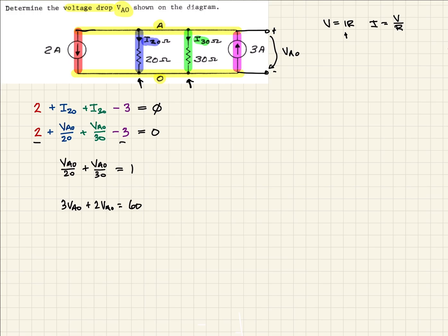Now, combine like terms. That's 5 VAO should be equal to 60. If we divide both sides by 5, we should come up with that VAO is equal to 12 volts.